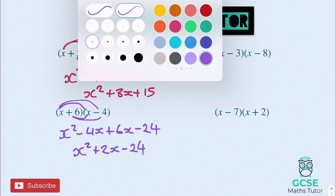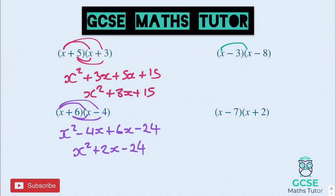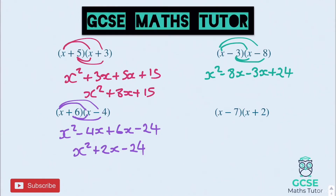On to the next one. x times x is x squared. x times negative 8 is negative 8x. Negative 3 times x is negative 3x. And negative times negative makes positive 24. Tidying up the middle: minus 8 minus 3 is minus 11, so x squared minus 11x plus 24.